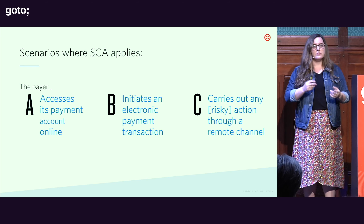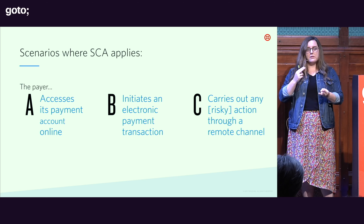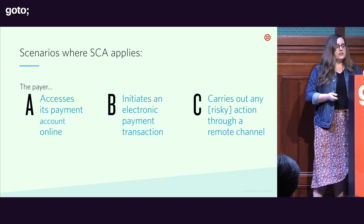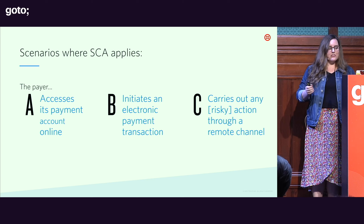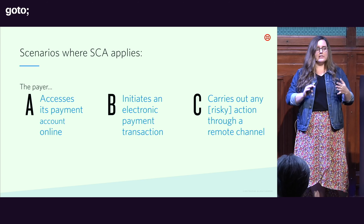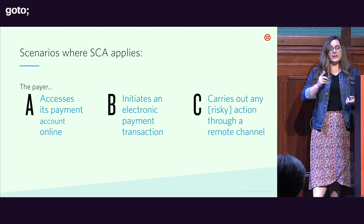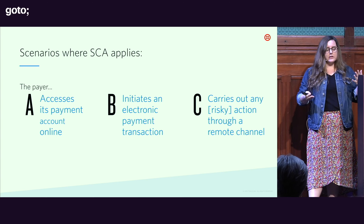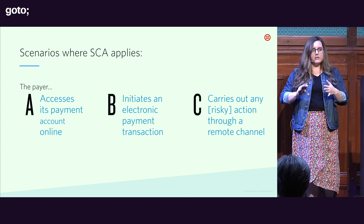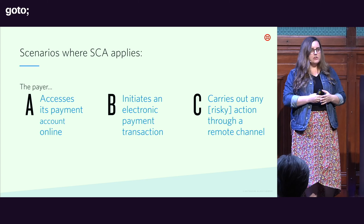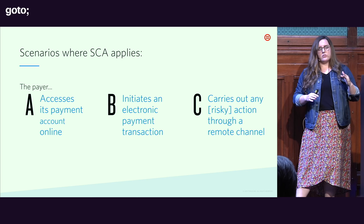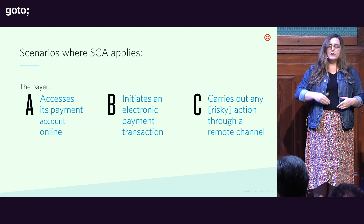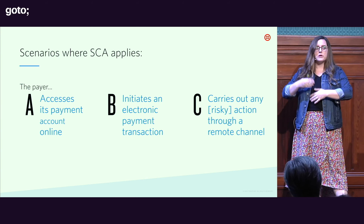Second, if they're initiating electronic payments — purchasing something, sending someone money, making a withdrawal, transferring money in or out of an account. Third, carrying out a risky transaction through a remote channel, such as adding a new payee to your account or changing the address on file. You might already see this enforced with re-authentication when you change your password or shipping address on websites.